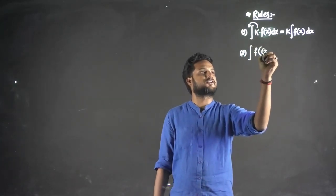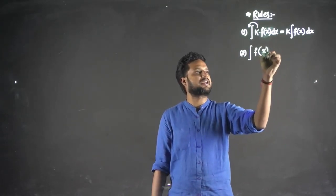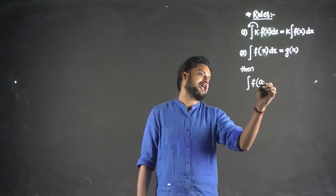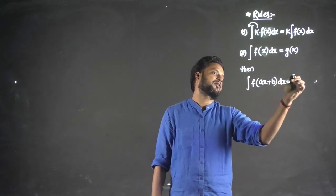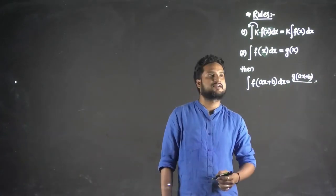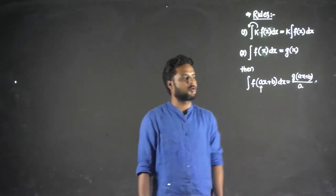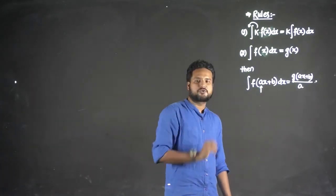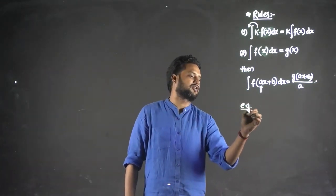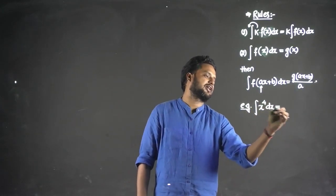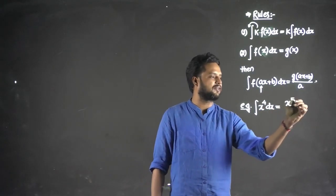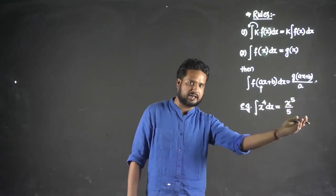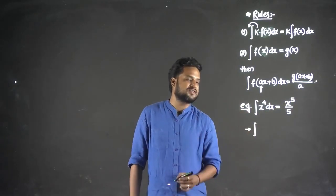The next important rule: if the integration of f(x) is g(x), then the integration of f(ax + b) will be g(ax + b) divided by a, where a is the coefficient of x. For example, the integration of x⁴ is x⁵ divided by 5, by the standard formula: integration of xⁿ is xⁿ⁺¹ upon n+1.